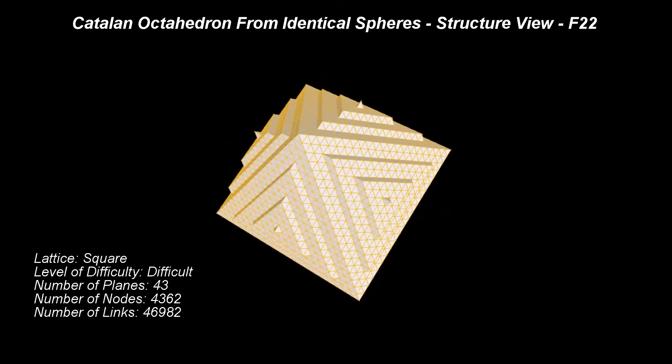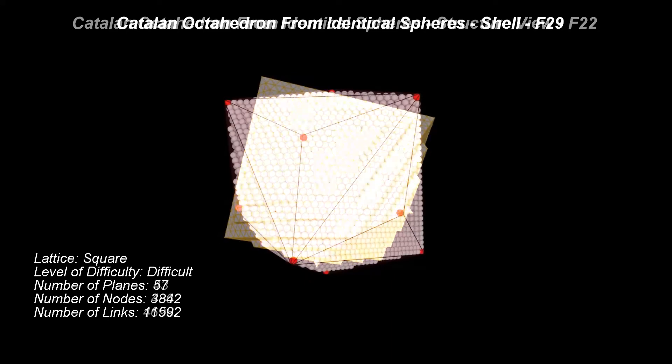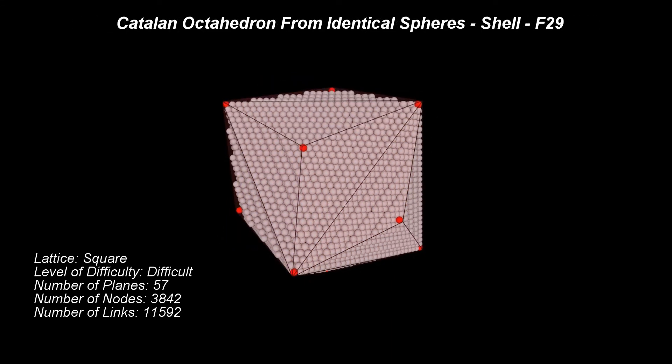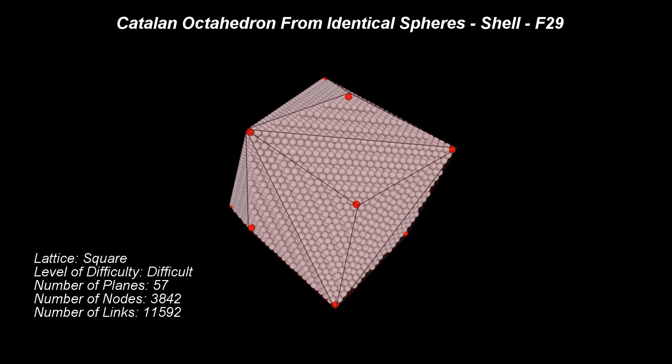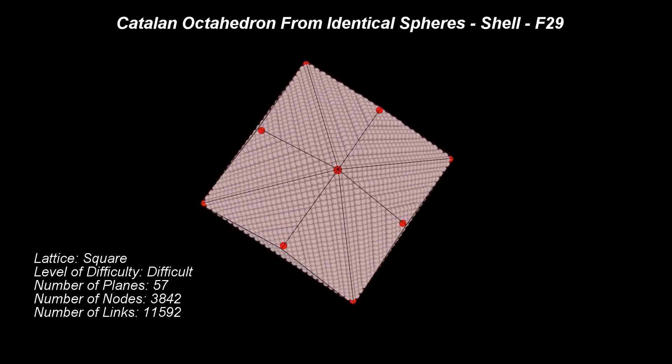Next, let us see a more developed version of this pattern. This Catalan octahedron pattern corresponds to the octahedron of size 29.